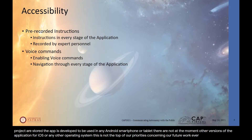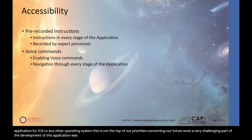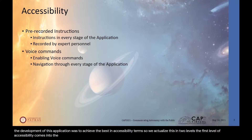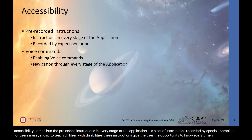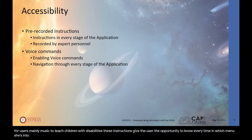A very challenging part of the development of this application was to achieve the best accessibility possible. We addressed this at two levels. The first level of accessibility consists of pre-recorded instructions at every stage of the application — a set of instructions recorded by a specialist therapist who uses mainly music to teach children with disabilities. These instructions inform the user at every point which menu they are in and what the next step should be.